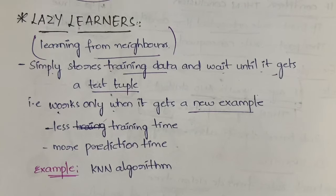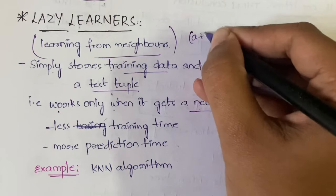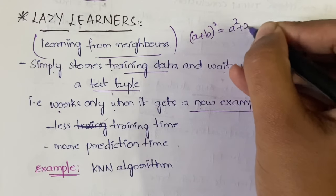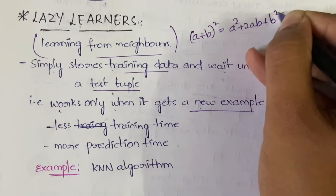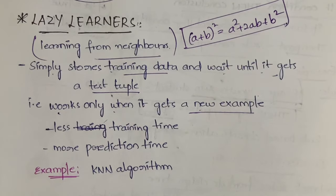If you're training some machine, suppose you taught the machine that (a+b)² = a² + 2ab + b². This is a formula that you made your machine learn. In case of lazy learner, what will happen is...